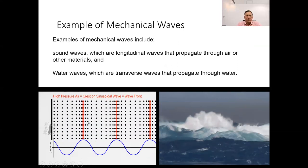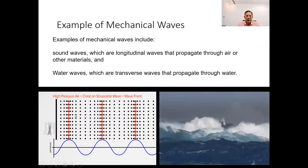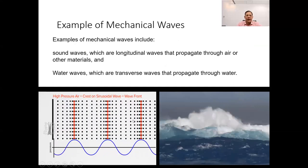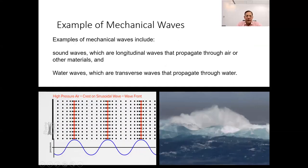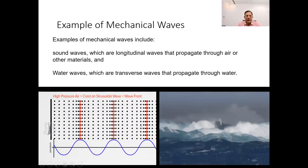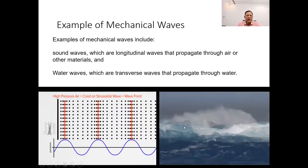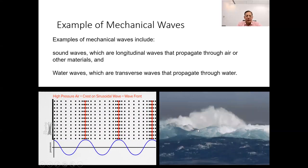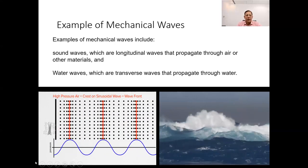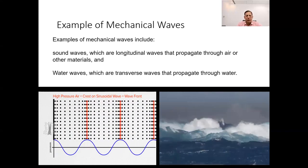Examples of mechanical waves encompass sound waves and water waves. Sound waves classified as longitudinal waves travel through mediums such as air or solids, causing particles to move parallel to the direction of the wave's propagation. Conversely, water waves are transverse waves that propagate through bodies of water, with particles oscillating perpendicular to the direction of wave travel. These examples highlight the diverse nature of mechanical waves and their ability to propagate through different materials.